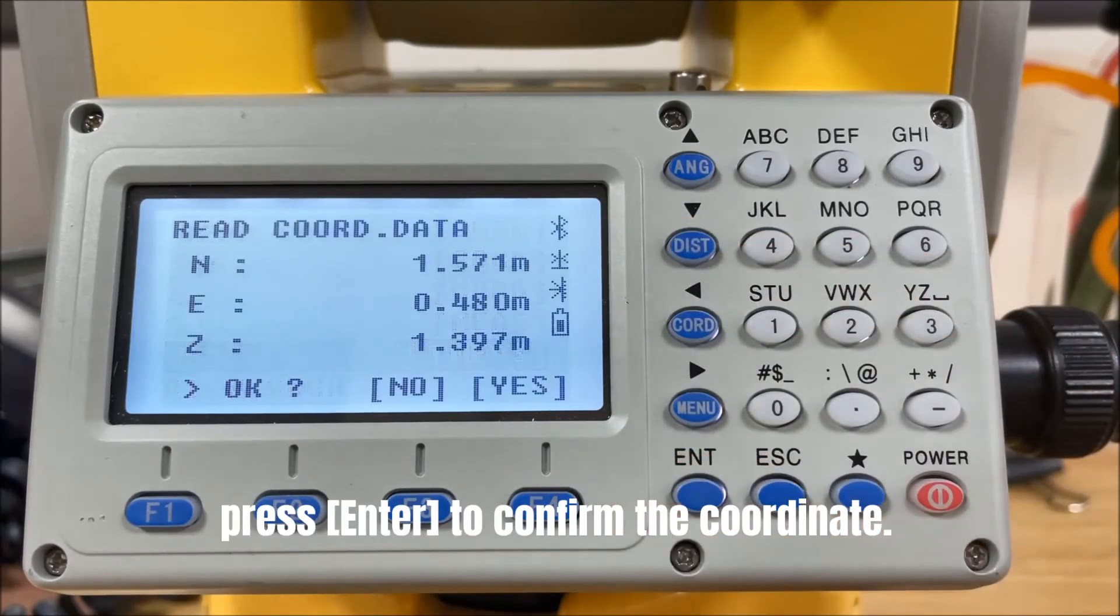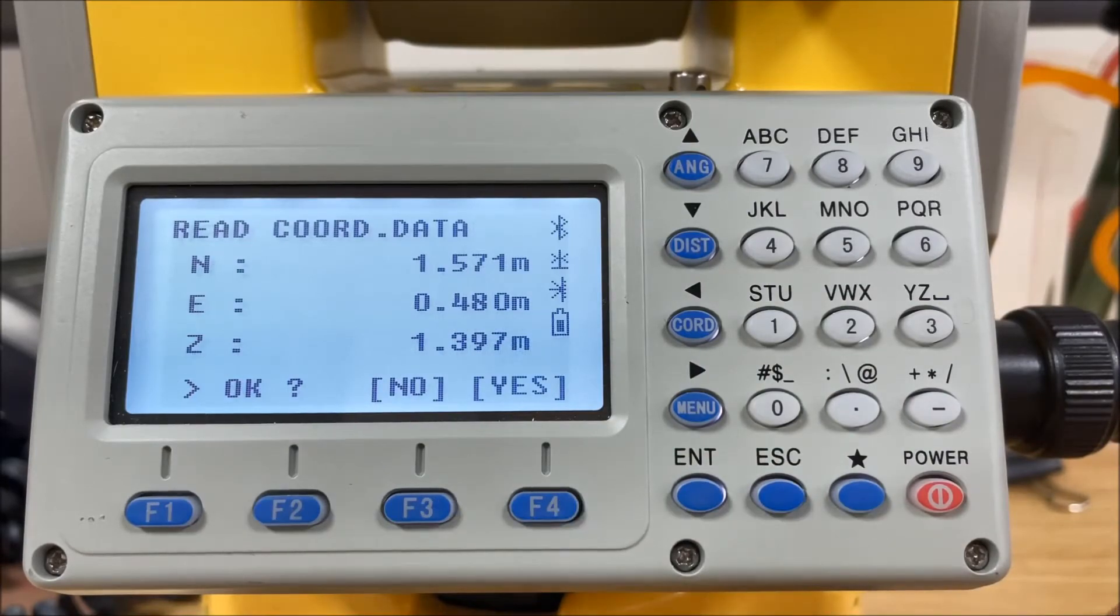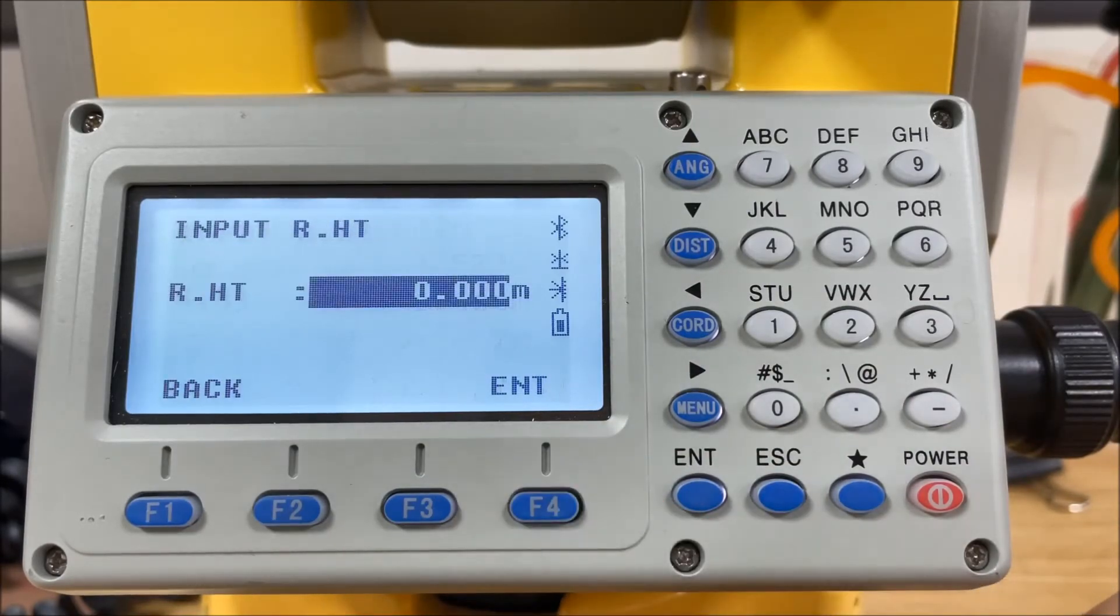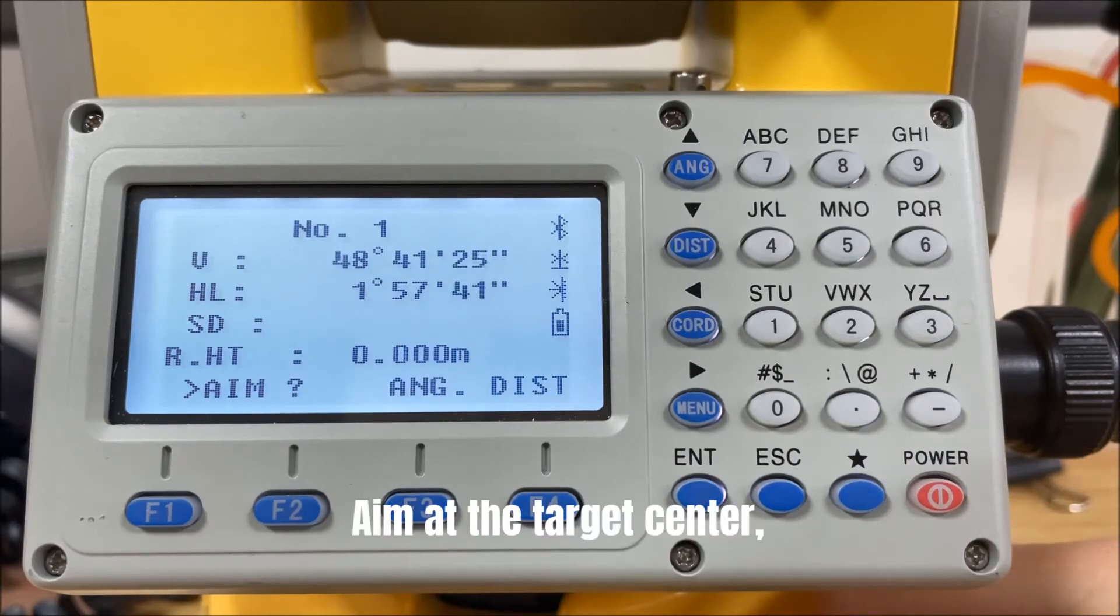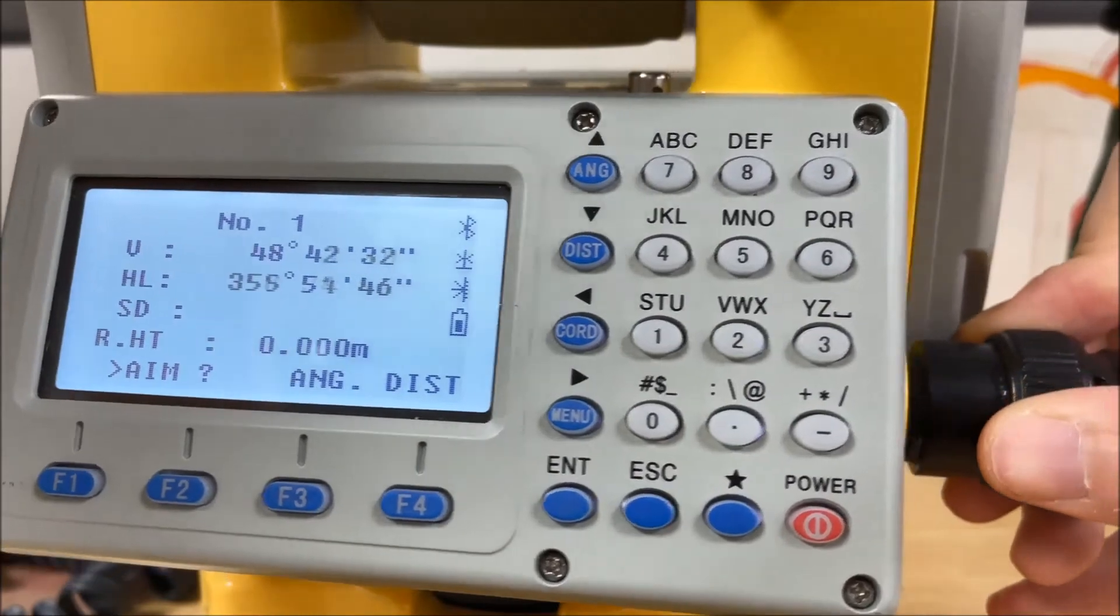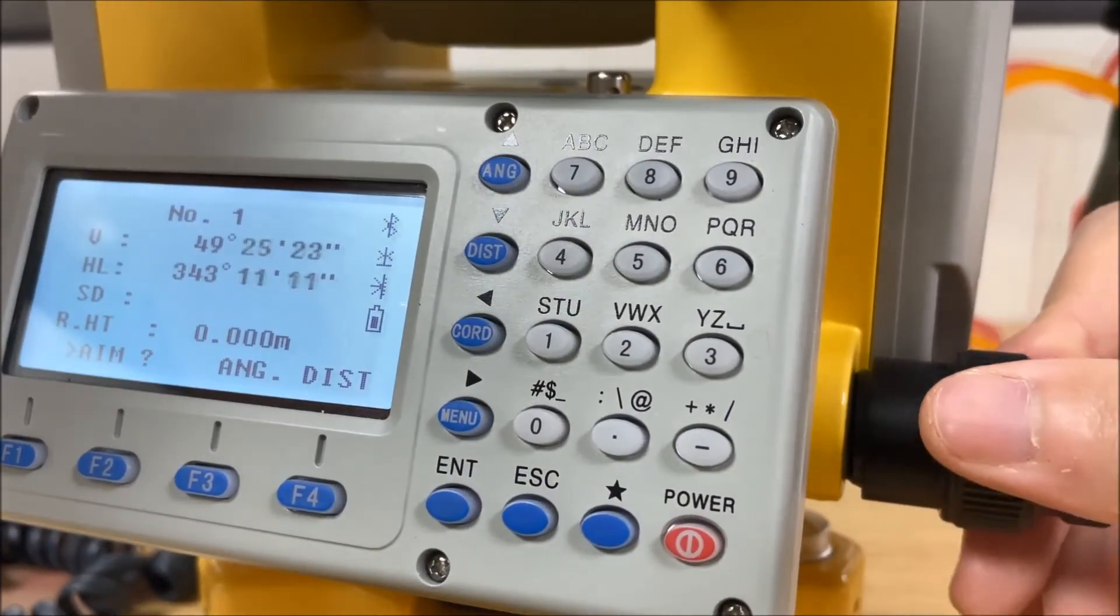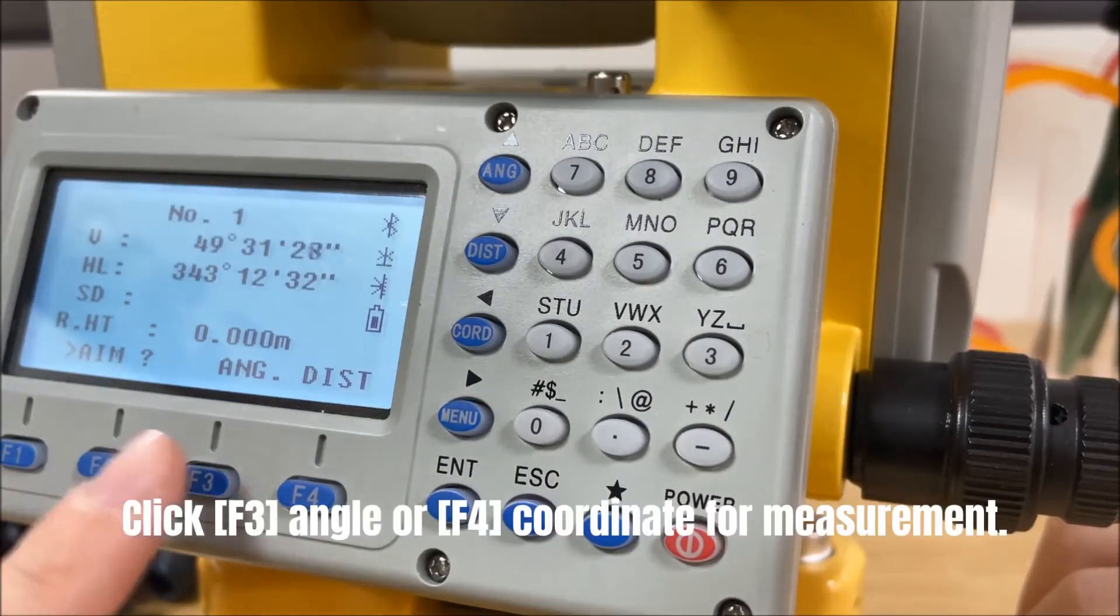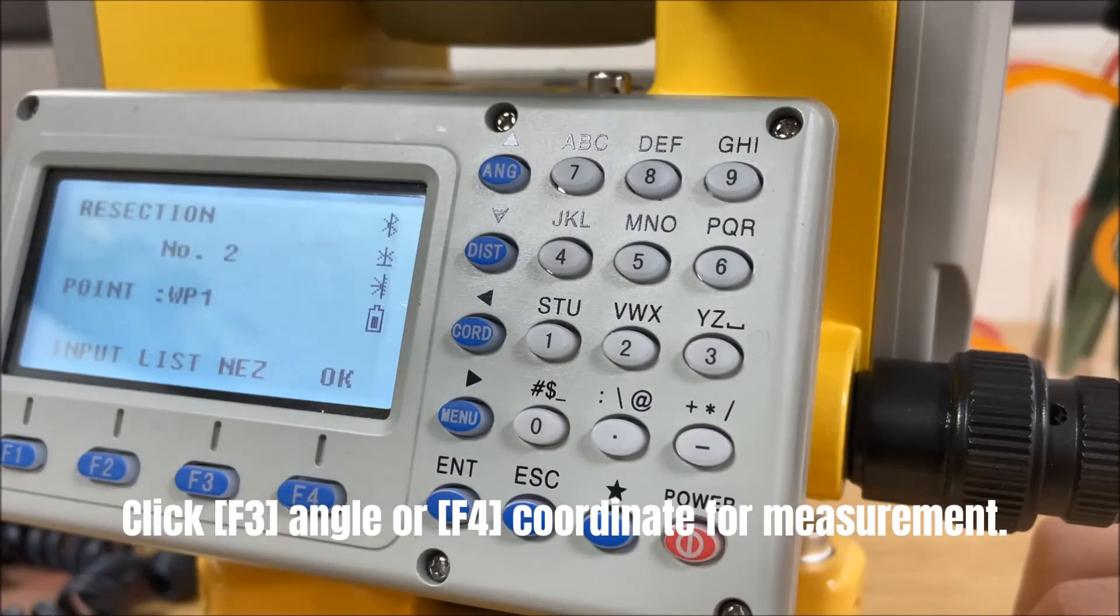Press enter to confirm the coordinate. Aim at the target center. Click F3 angle or F4 coordinate for measurement.